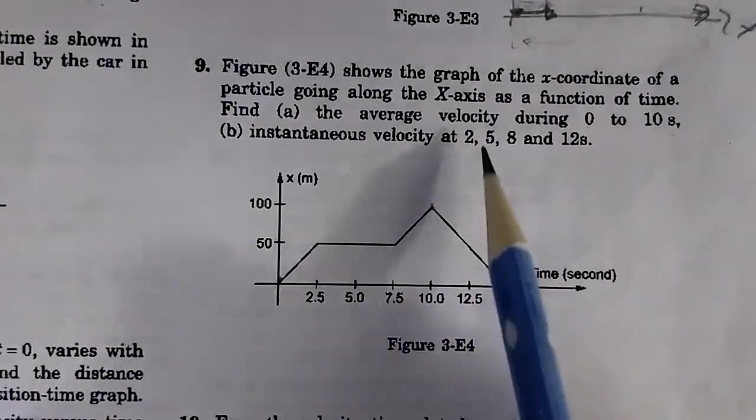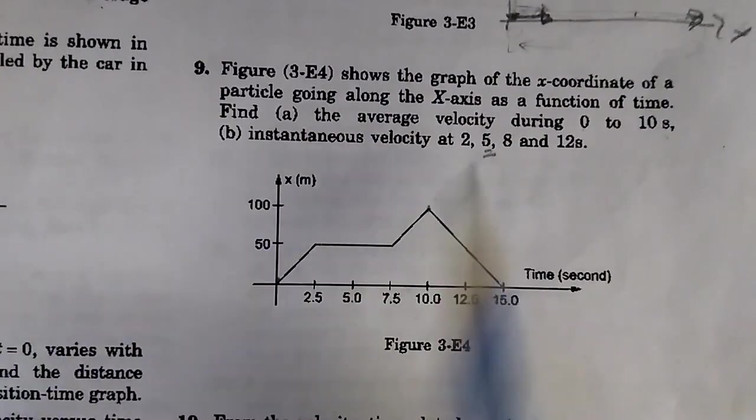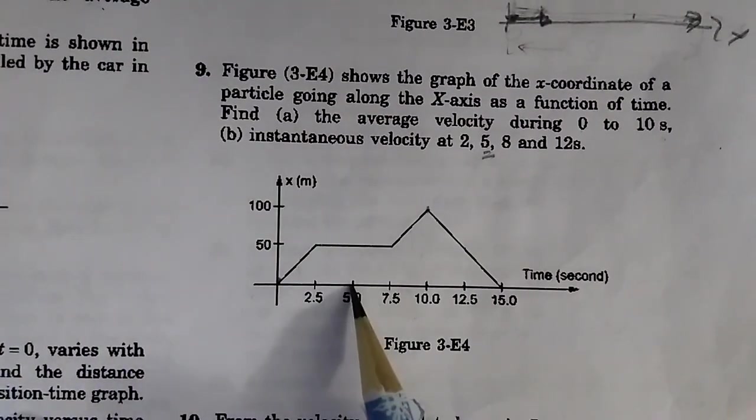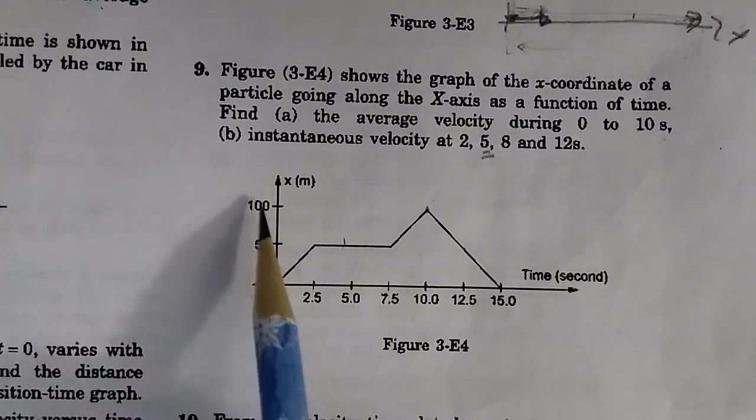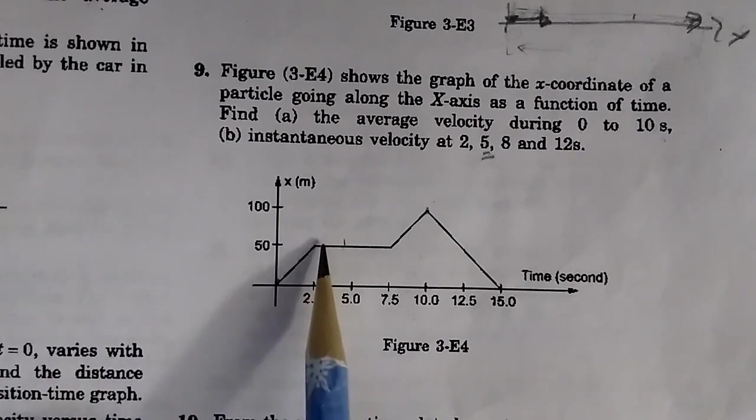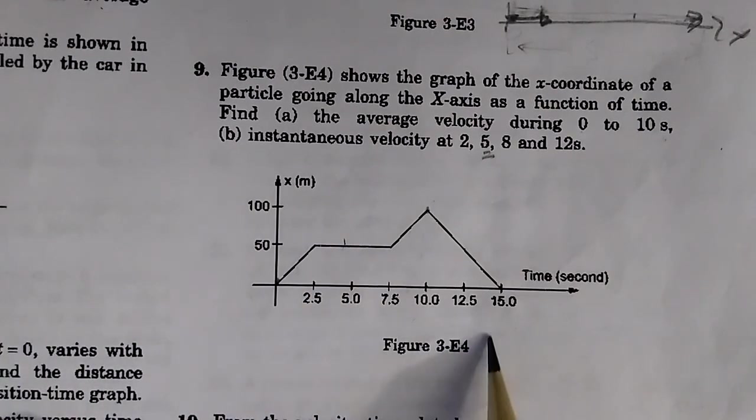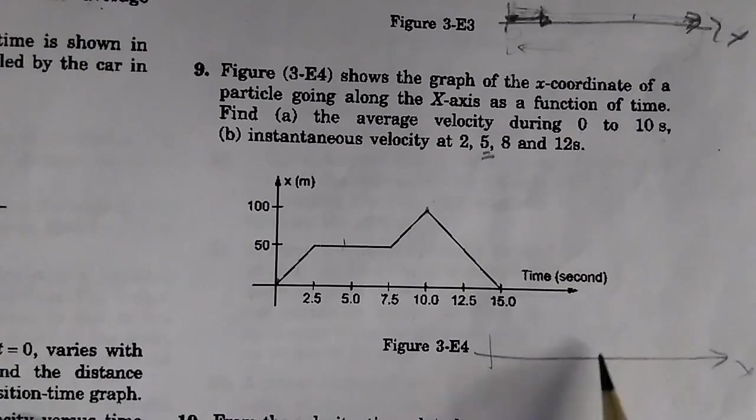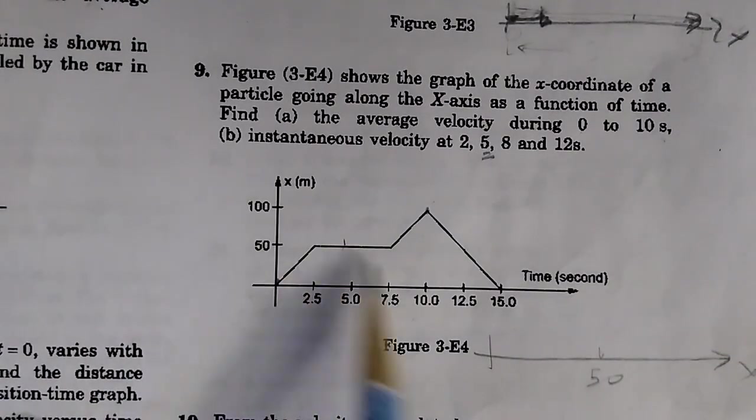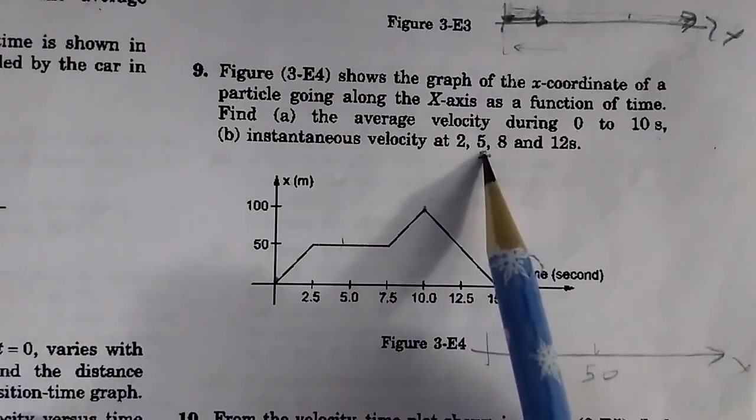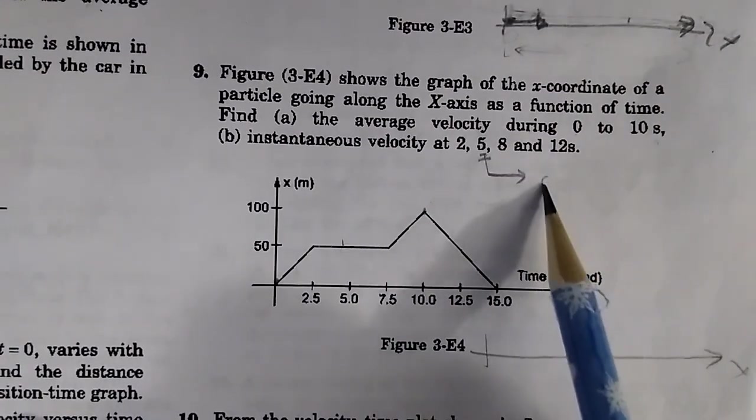Let's do the easiest part. Let's find the instantaneous velocity at t equal to 5 seconds. At t equal to 5 seconds, the particle is stationary, it stops at 50. If this is the x-axis, the particle has stopped at 50 meters, and therefore at this point in time the velocity is 0.